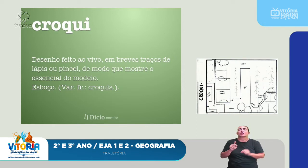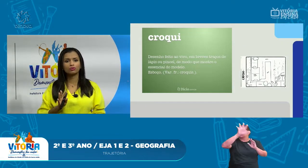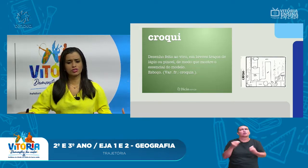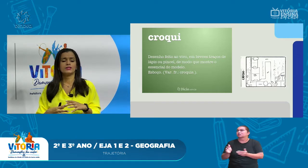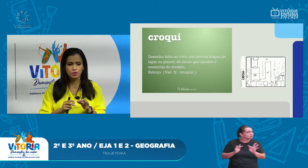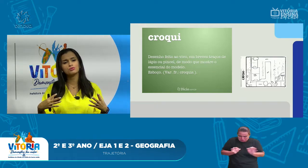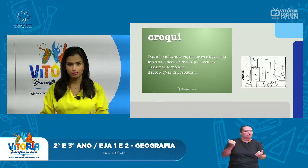It is simply when the teacher says, 'Let's draw the front of the school? Let's draw the school in its general context? How do you see the school? What are its divisions?' That simple drawing, with no detailed measurements, just to represent the space — that is a CROQUI.